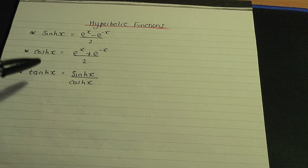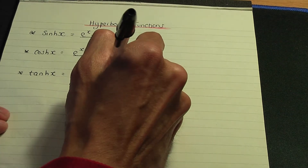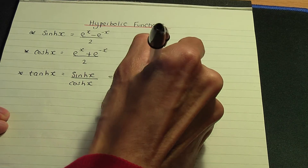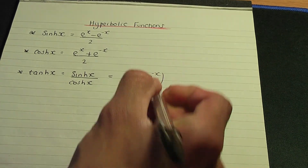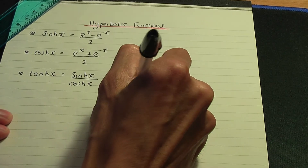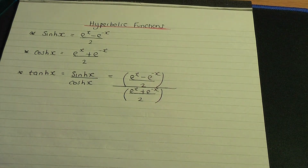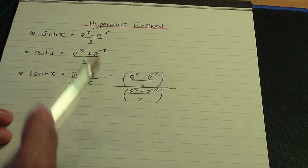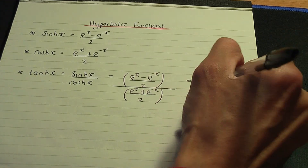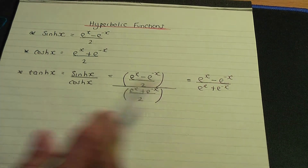With this in mind, we can derive a definition of hyperbolic tan using the definitions of hyperbolic sine and cosine. If I do a substitution — hyperbolic sine is (e^x − e^(−x)) / 2 divided by hyperbolic cosine, which is (e^x + e^(−x)) / 2 — we can simplify that. The definition of hyperbolic tan is (e^x − e^(−x)) / (e^x + e^(−x)).